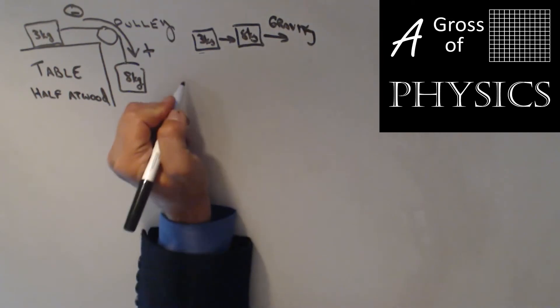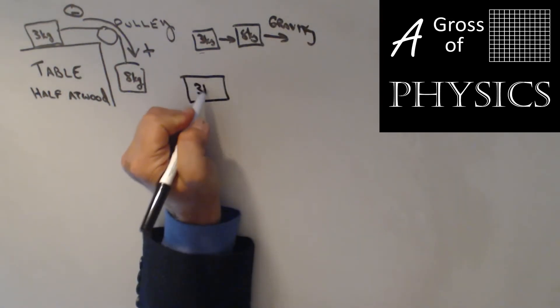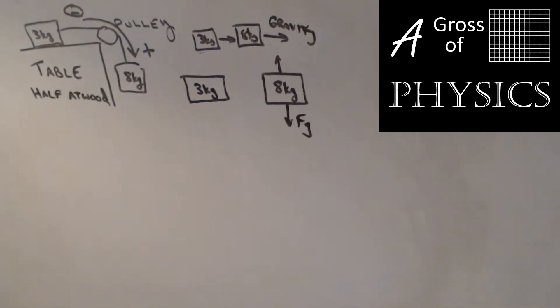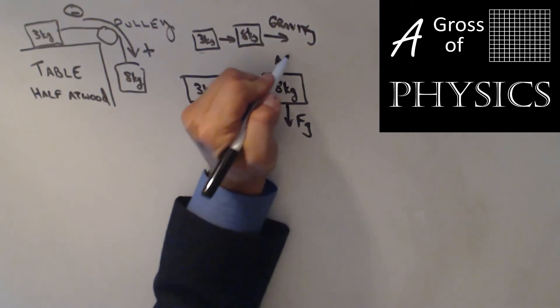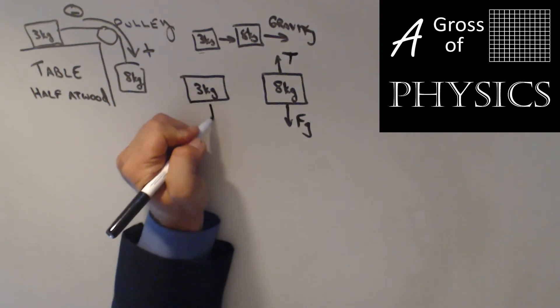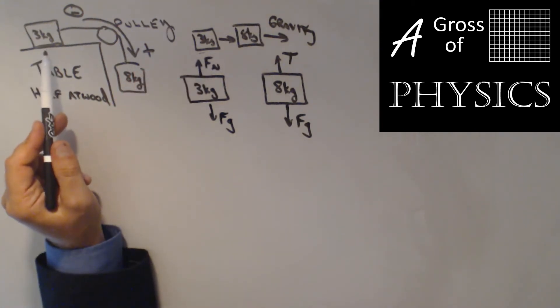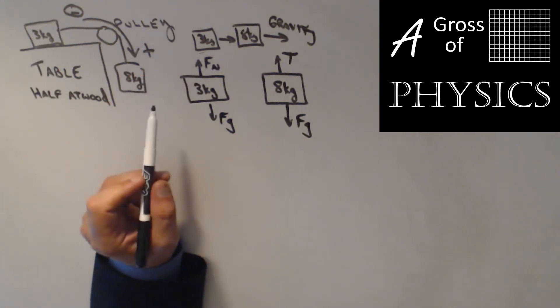Since we have two objects, you're going to draw a free body diagram for both. I have the 3 kg mass. For the 8 kg mass, we have the force of gravity going down, and the rope is pulling up, so we have tension. For the 3 kg mass, we have the force of gravity down, the normal force of the table because it's in contact with the surface, and tension pulling to the right.